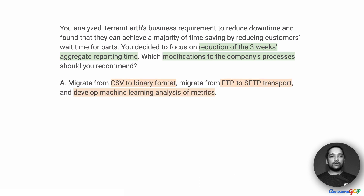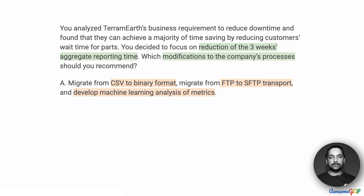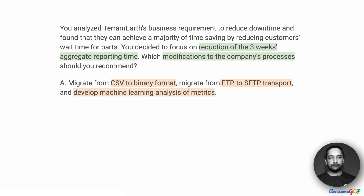Let's look at option A. Option A suggests that we migrate from CSV to binary, we migrate from FTP to SFTP transport, and develop machine learning analysis of metrics. There are three parts to this, so let's look at them one by one and see if some of them are suitable and some are not.